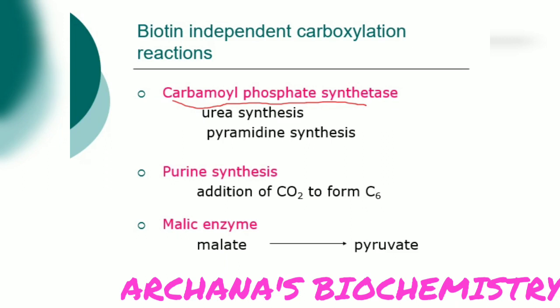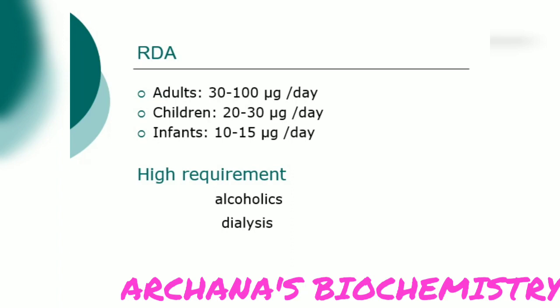Biotin-independent carboxylation reactions include carbamyl phosphate synthetase, purine synthesis, and malic enzyme. Carbamyl phosphate synthetase is seen in urea synthesis and pyrimidine synthesis (CPS1 and CPS2). Addition of carbon dioxide occurs at C6 of purine synthesis. Malic enzyme converts malate to pyruvate and also acts as a source of NADPH.